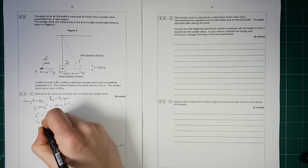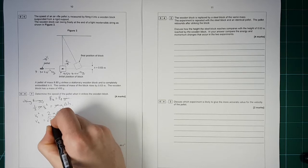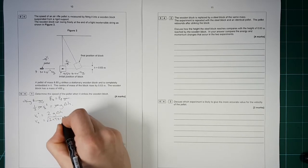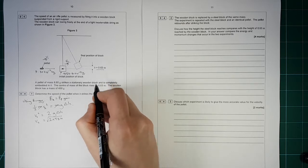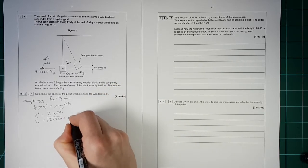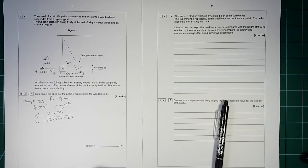And we have v2 squared is equal to 2g delta h. So v2 is equal to the square root of 2 times by, we need g, 9.81. And we need delta h, which is that height there. So that's 0.63.